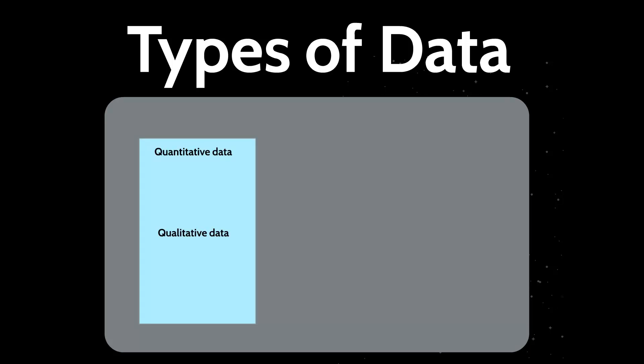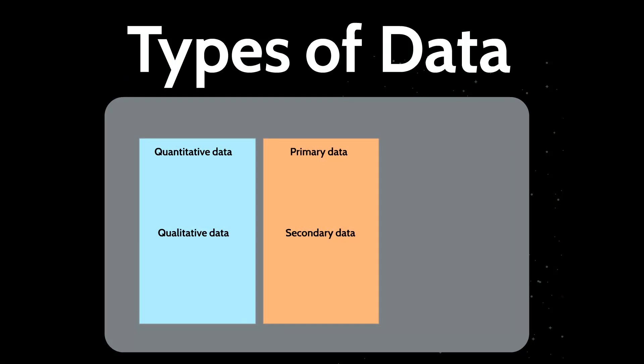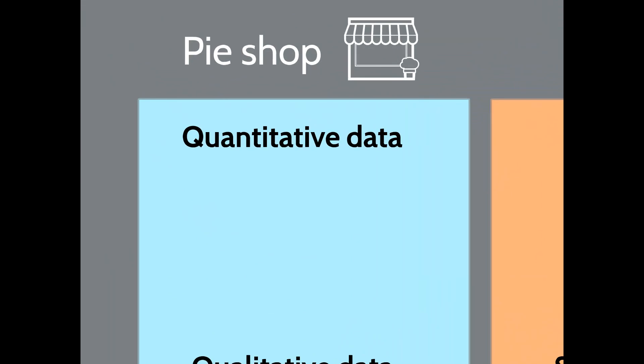We can break down the types of data into three key elements: whether they are quantitative or qualitative, whether it is primary or secondary data, or continuous and ad hoc data. I'm going to explain each of these and give an example, and the running example we're going to use is that of a pie shop.